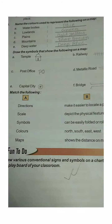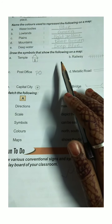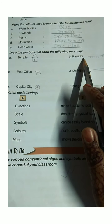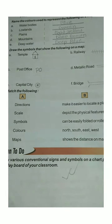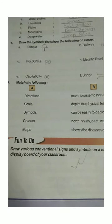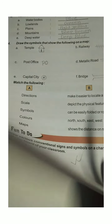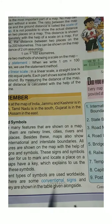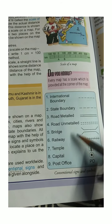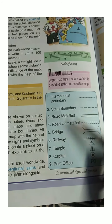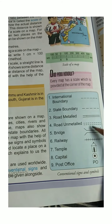The next thing is to draw the symbols that show the following on a map. You can see here the symbols for International Boundary, State Boundary, and Road Metal.